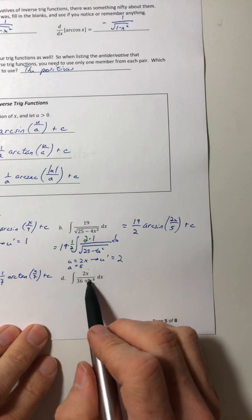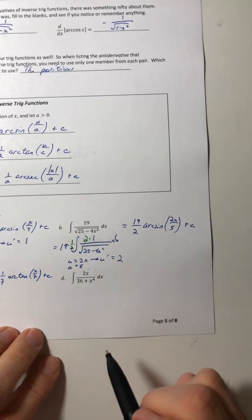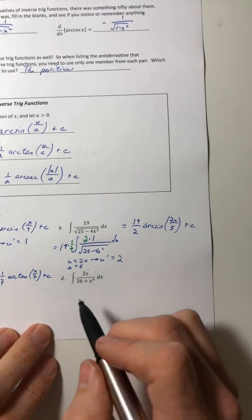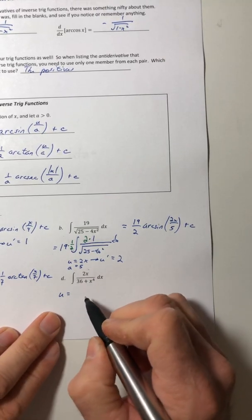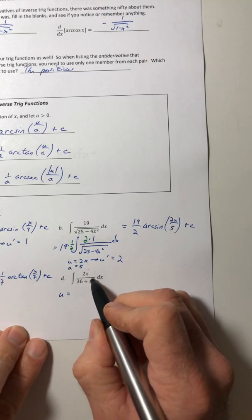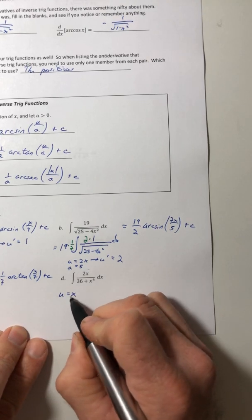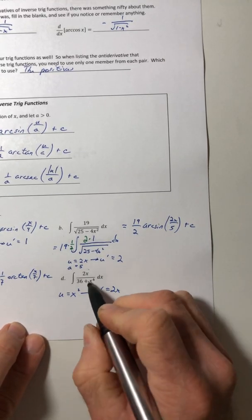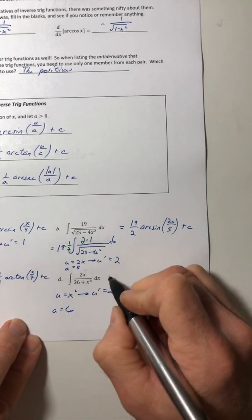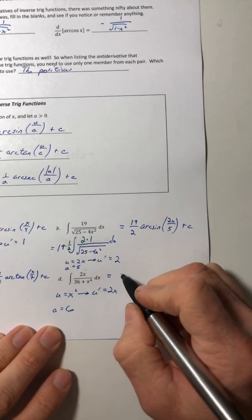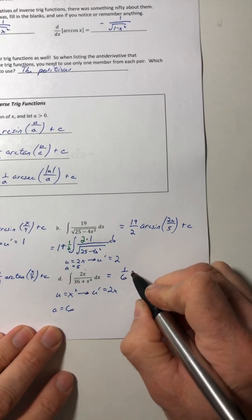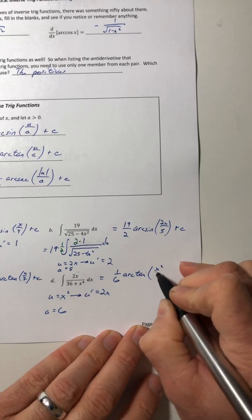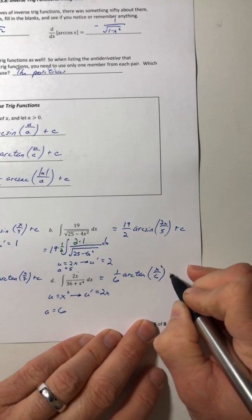So we have a fraction. Is the derivative of the denominator on top? No. The derivative of the denominator is 4x to the third. That's not even close. So let's see if it fits the arc tangent. The u is the square root of this term, which would be x squared. And that's the derivative I'm looking for. And my a is 6. So follow the format. 1 over 6 arc tangent of x squared over 6 plus c.